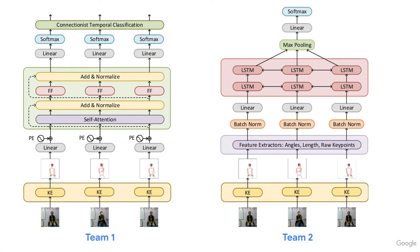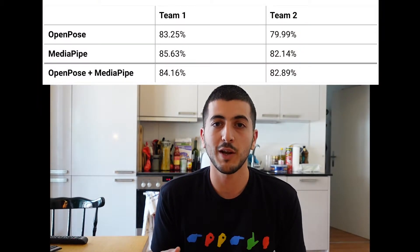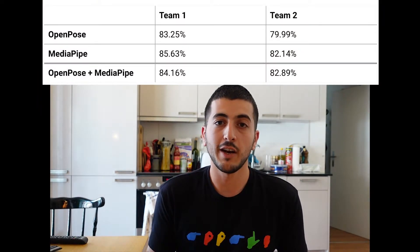We approached the recognition task with two independent experiments performed by two teams unaware of each other's work throughout the validation stage. As you can see, these models are quite different from one another. However, despite that, both teams performed similarly with validation accuracy ranging between 80 to 85 percent. This rules out trivial errors and implementation issues — despite both teams working independently and with two different pose estimation tools, both teams achieved similar evaluation scores.